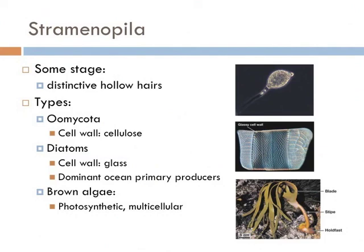Diatoms are a major group of protists known as algae and are one of the most common types of phytoplankton. Most diatoms are unicellular, although they can exist in colonies in the shape of filaments or ribbons. The main characteristic of diatom cells is that they are encased within a unique cell wall made of silica — nothing more than glass. So here we have a unique group of organisms that photosynthesize and have cell walls made out of glass. The oddball in this group is brown algae, which don't fit monophyletically with the red and green algae. They're within this straminopila group, they're photosynthetic and typically multicellular, but they do have distinctive hollow hairs at the early part of their life cycle.